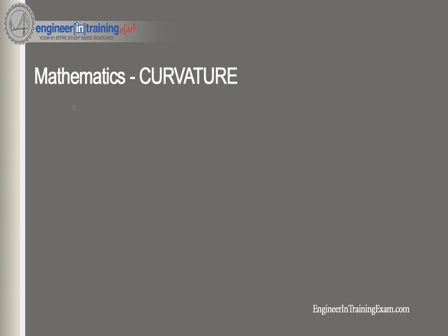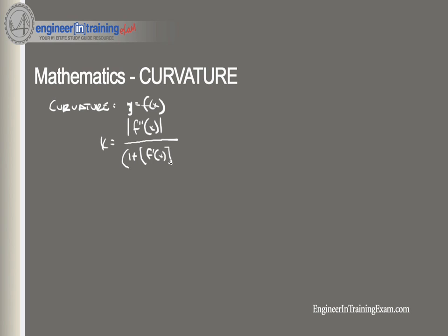Given a curve defined by y is equal to f of x, the general formula for curvature can be found using the equation K for curvature equals f double prime of x divided by 1 plus f prime of x squared, raised to the three halves. That's the general formula for curvature of any function f of x.